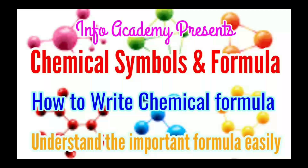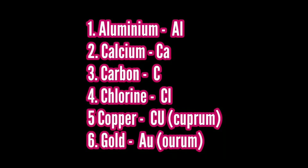Friends, we know that there are only 118 elements and millions of compounds. We use symbols to represent the elements. A compound is represented by a formula which contains symbols of all the elements present in a molecule of that compound. Firstly we discuss elements, their Latin names and symbols.